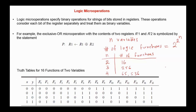Since 2 to the power 2 to the power 4 equals 2 to the power 16, which is 2 to the power 10 multiplied by 2 to the power 6. This value is 64, and here we have 1,024.